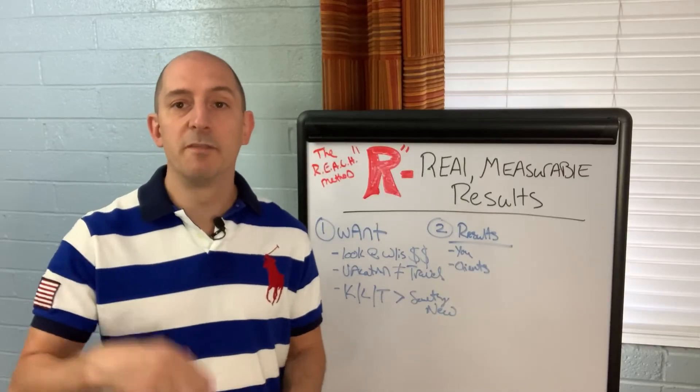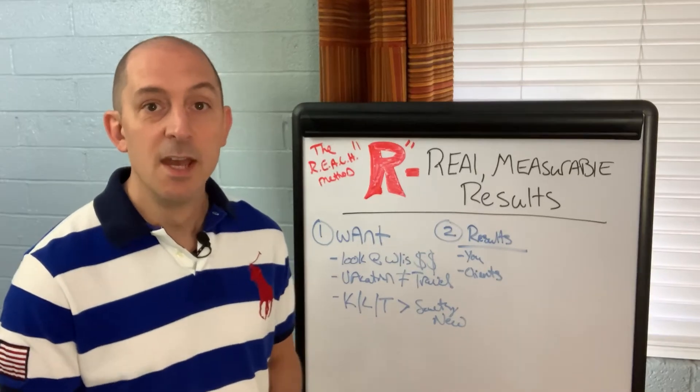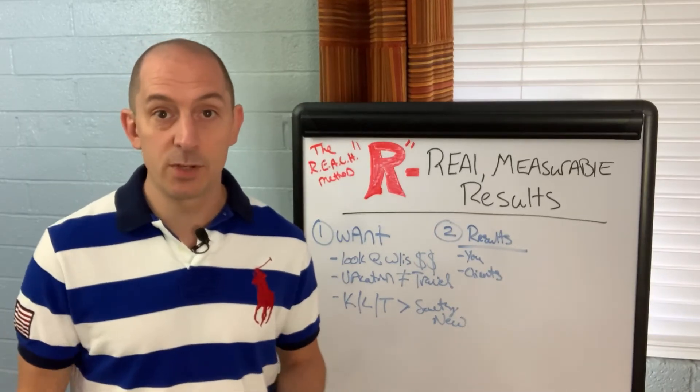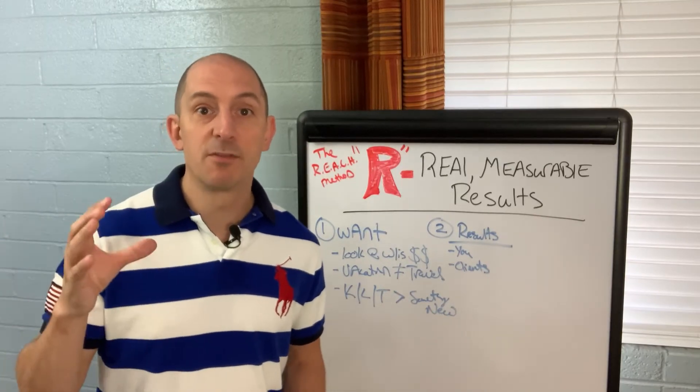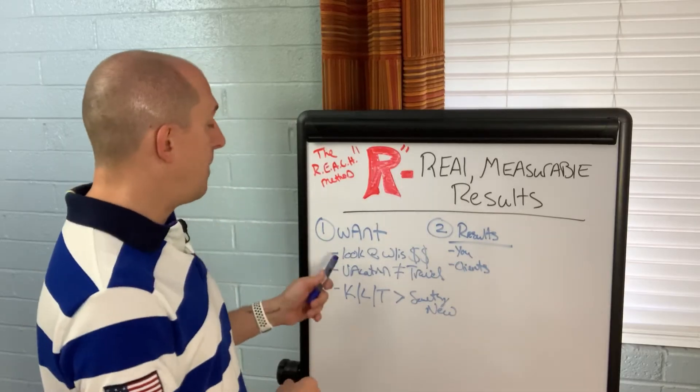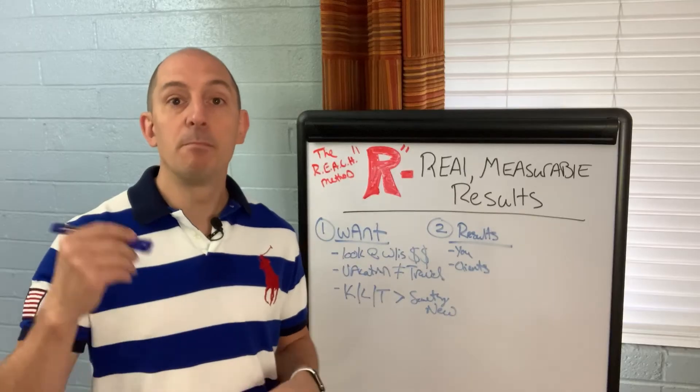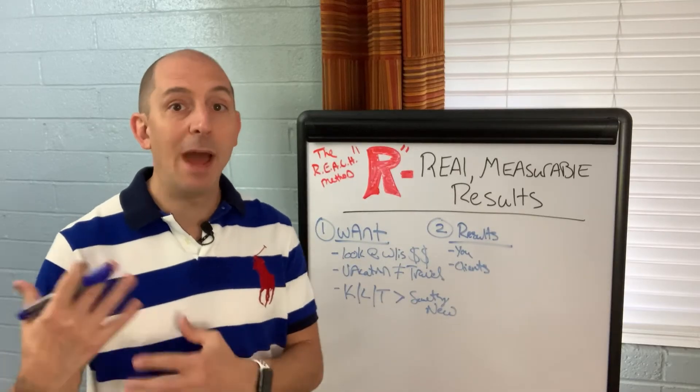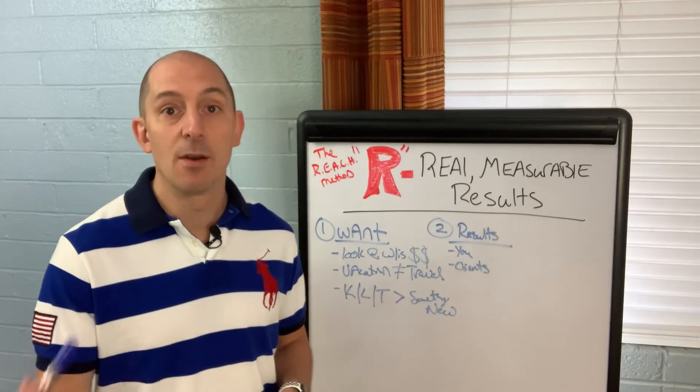So that's step number one: what do they really want? What results have you gotten for yourself and what results have you gotten for your clients? Now you might be saying, well Steve, I don't have any results yet. I'm just getting started. That's okay. Go offer to work with some clients for free and get them results. This is where it goes back to what do they want? Pick that out and get them the result. Once you have gotten some results, then you can start talking about how to sell it and how to monetize it.